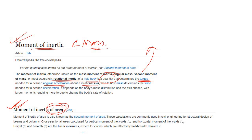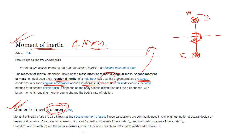Let's first visualize moment of inertia of mass. Say we have two masses — mass one and mass two — connected by a thin rod. This is the axis about which we want to rotate them. To create angular acceleration of these two masses, you simply apply a torque about that axis.